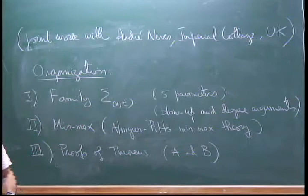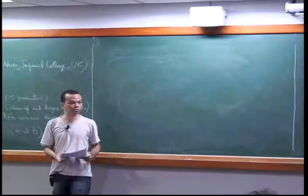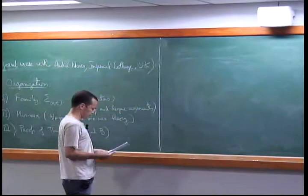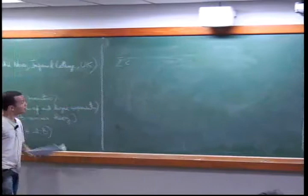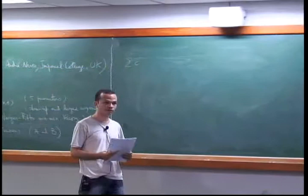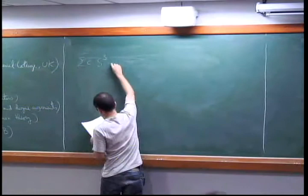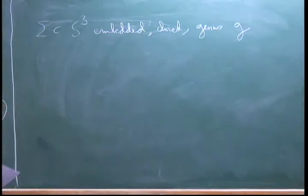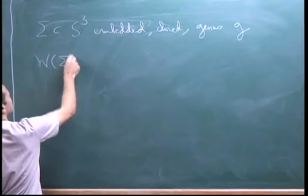Today we're going to study this family and do some calculations with this explicit family of surfaces. We need to analyze the behavior of the surfaces as the parameters go to the boundary of the parameter space, fix the lack of continuity, and detect the genus of the original surface somehow in the family. So let sigma be an embedded, closed, genus G surface contained in the three-sphere — smooth.